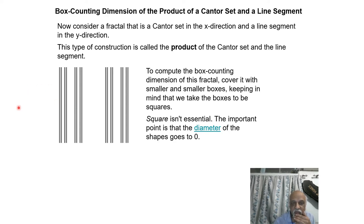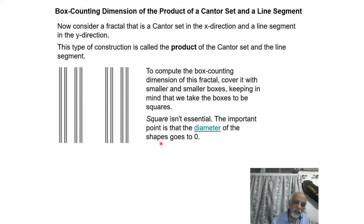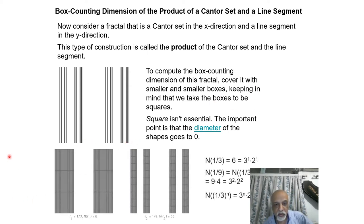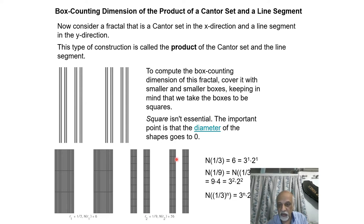It is not necessary to take only squares — the main requirement is that the diameter of the covering shape should go to zero. It can be a rectangle, triangle, or square, but the largest diagonal must go to zero in the limit. So we cover with a unit square, then take 1/3 size squares — you need 6 such squares. For 1/9 size you need 36. The pattern is: N(1/3^n) = 3^n × 2^n.